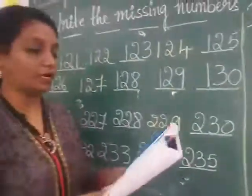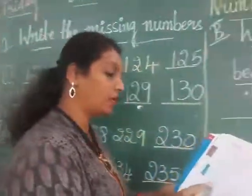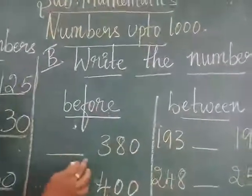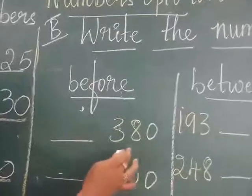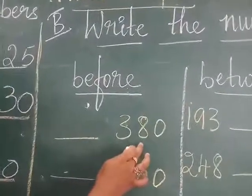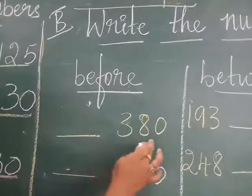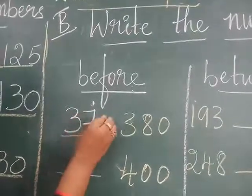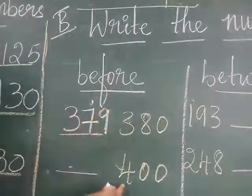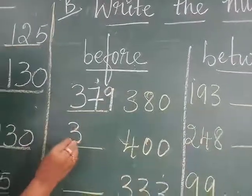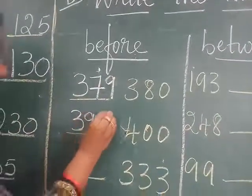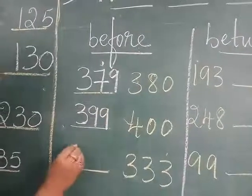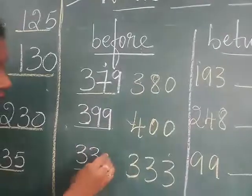Now go to B1 — write the number. In B1, what comes? Before, between, after. If you see here, you can see a three-digit number: 380. Before 380 comes 379. Before 400 comes 399. Before 333 comes 332.